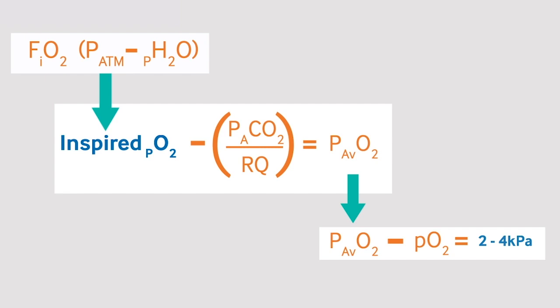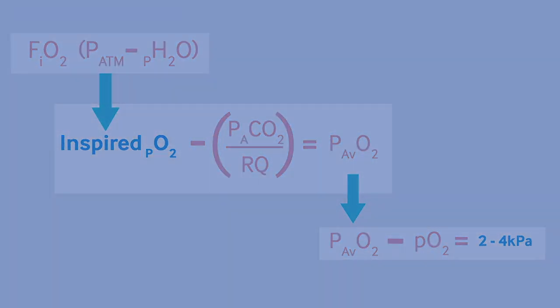A high value, above 4 kPa, therefore implies there is impaired gas exchange between the alveolus and the blood. You can complete the full module and learn more at learning.bmj.com.